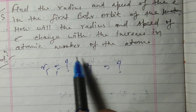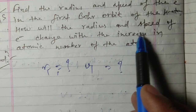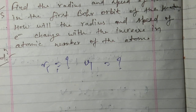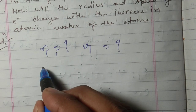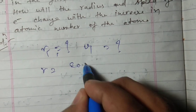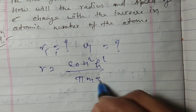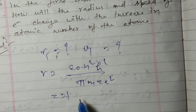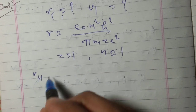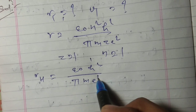We also have to calculate how the radius will change with the increase in atomic number of the atom. So we know that the radius of the Bohr orbit is given by r = ε₀ n² h² upon π m Z e². This is the general formula. In case of hydrogen Z equals 1, and for the first orbit n equals 1, so radius for hydrogen equals ε₀ h² / (π m e²).